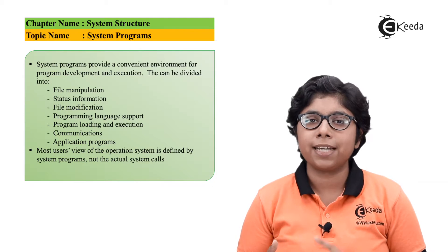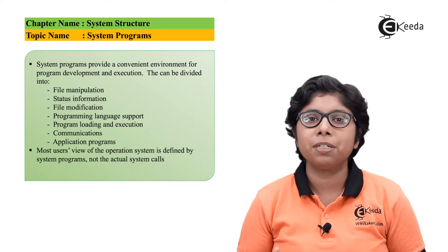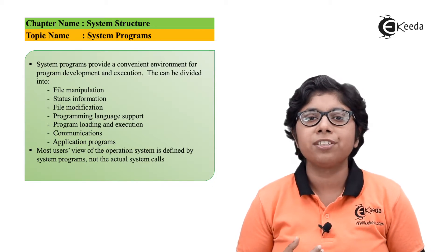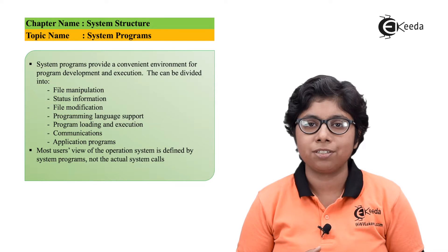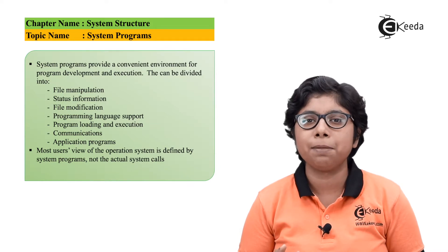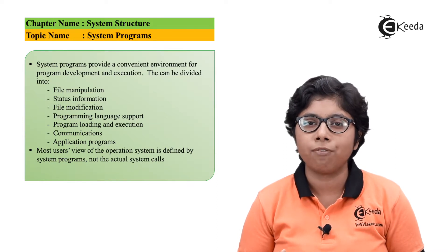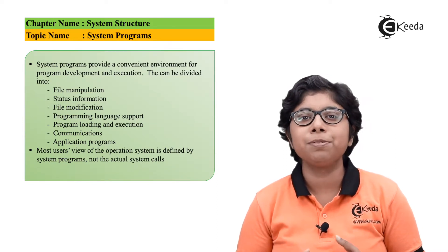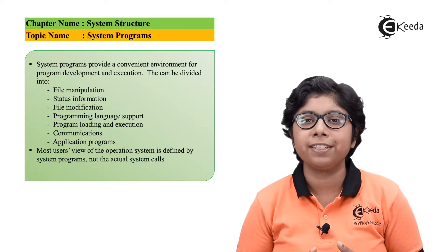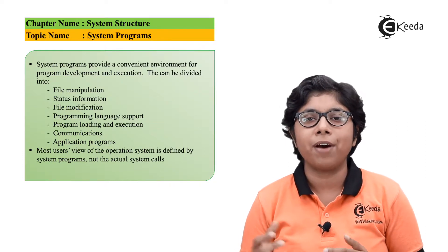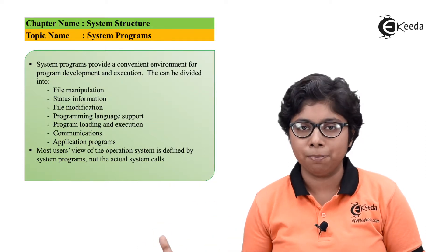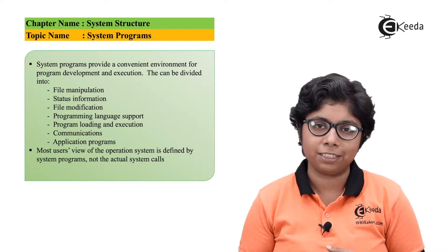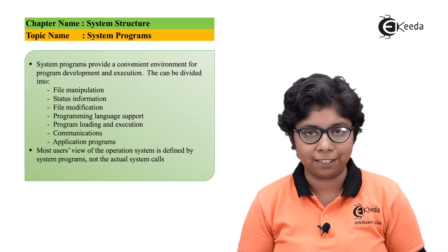The next category is programming language support. Compilers, assemblers, debuggers, and interpreters for common programming languages such as C, C++, Java, Visual Basic, and Perl are available to the operating system via separate download or within the operating system kernel itself.